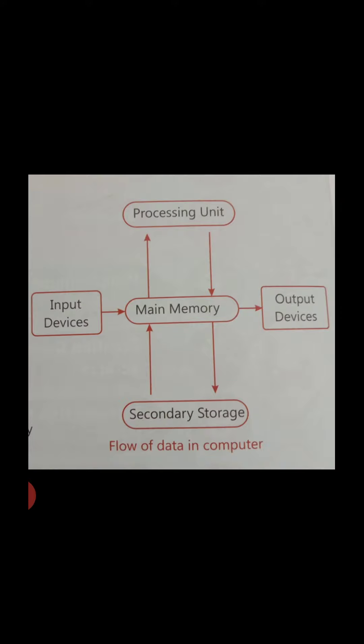The first point is data. Data is a collection of raw facts, or you can say unprocessed information. Before processing, the information is data. And after processing, the data is information.